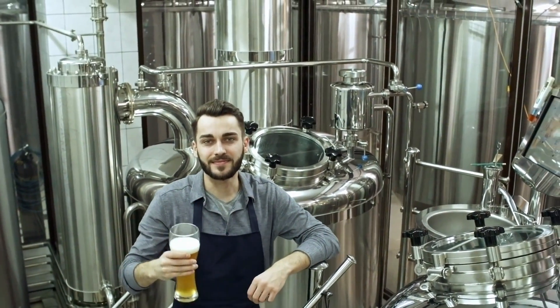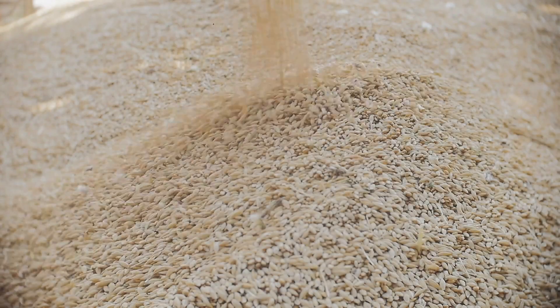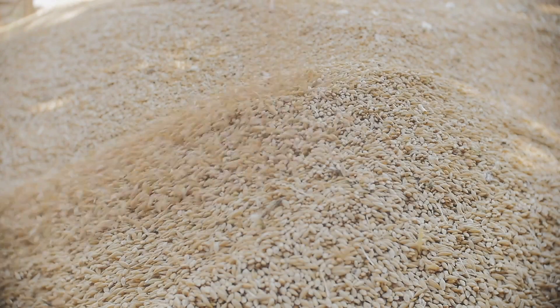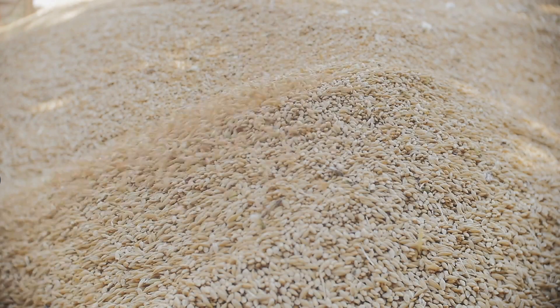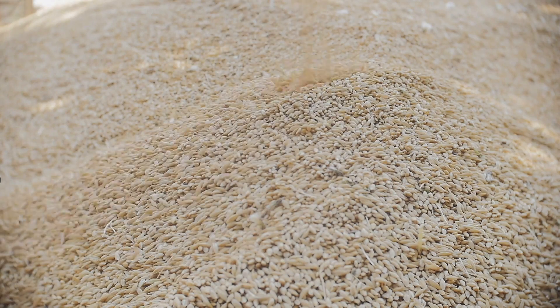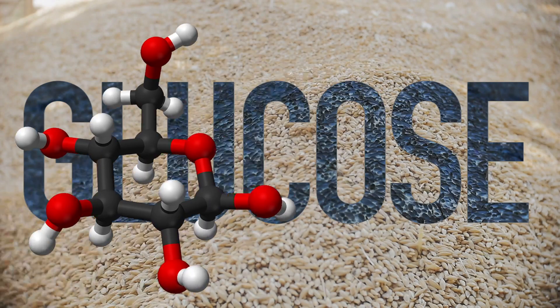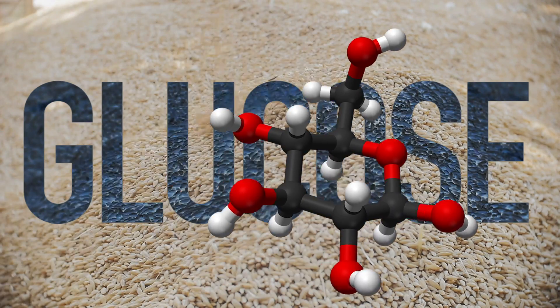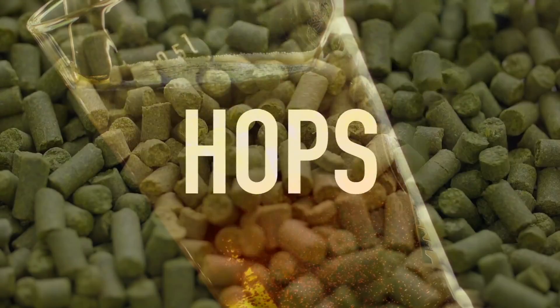If you're wanting to brew a beer that is more caramelly or toasty, then you'll need to roast your grains more than usual. Darker roasted grains result in grains that have more degraded glucose molecules, ultimately resulting in a darker beer.